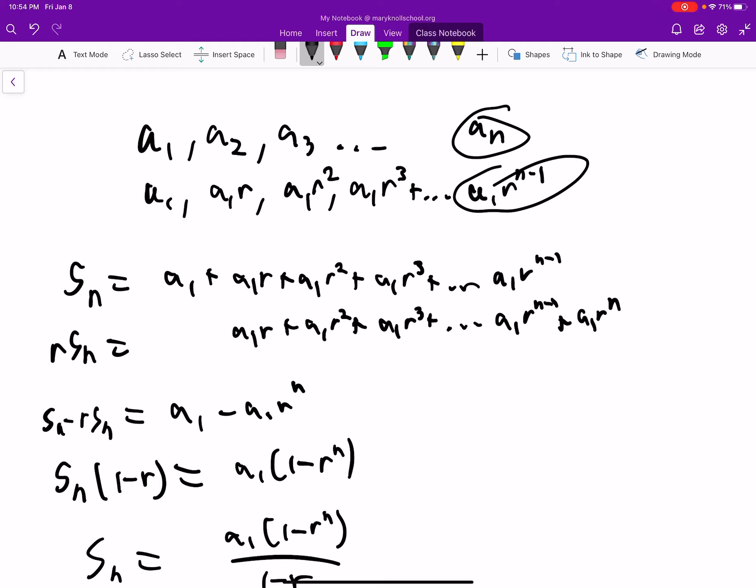This minus nothing is a1, and then all of these cancel out. That one minus that is zero, zero, zero, all these are zero. And then finally, when you take this minus this, you get that negative number there. So this minus a1 minus nothing is a1, and finally nothing minus a1r to the n is negative a1r to the n.